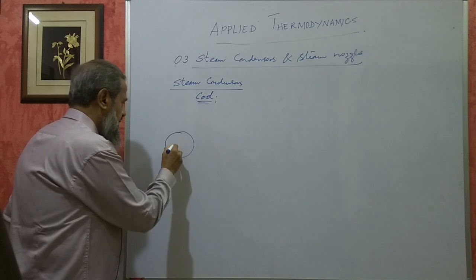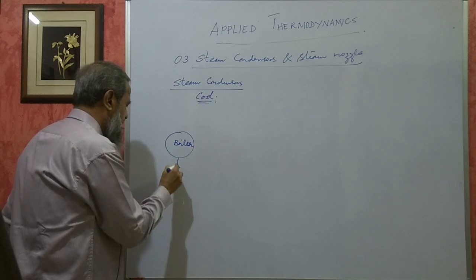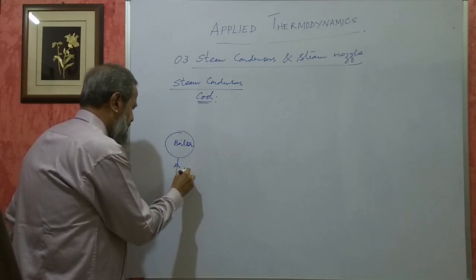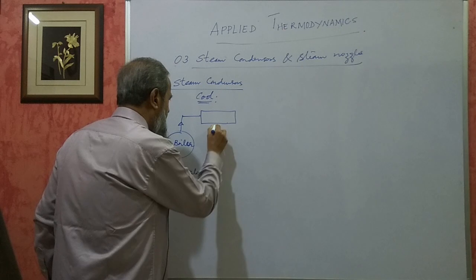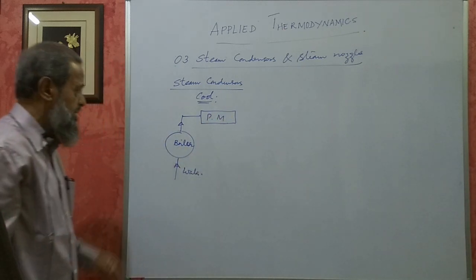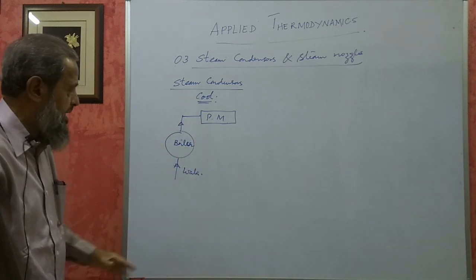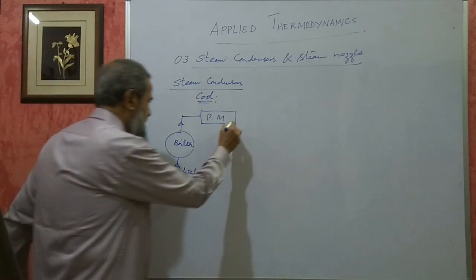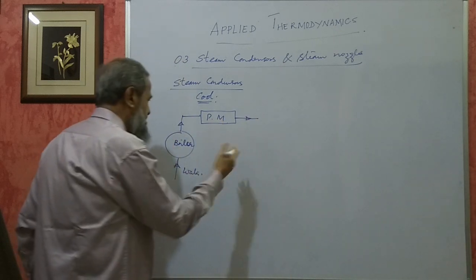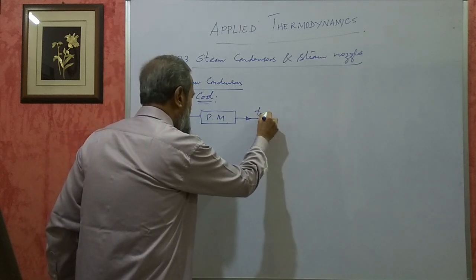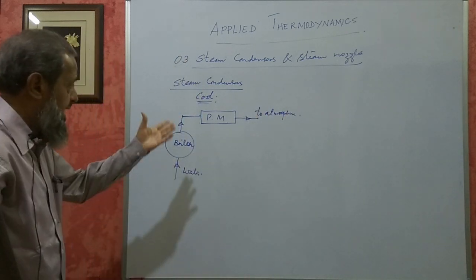We have a boiler to which water is fed - this is called feed water. Water is fed into the boiler, it converts it into steam. That steam comes into a prime mover where it loses its heat, its pressure becomes lesser, it expands, it does work. If you are not using a condenser, this steam has to be left to the atmosphere, making it a non-condensing plant.